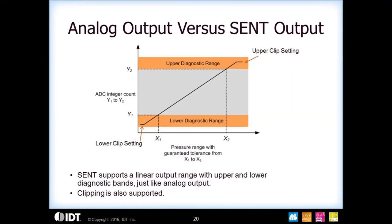SENT has the same diagnostic features you're used to seeing in an analog output in an automotive application, where you can set a lower and upper diagnostics range. You can set clipping limits to have the output clip at the low end and the high end, and you can also set the linear range. You can record in the part your x1 and x2 values for linear range — for example, from a pressure range of 0 to 100 PSI — and then your y1 and y2 for the linear range, where you can define the count or percent of full scale.